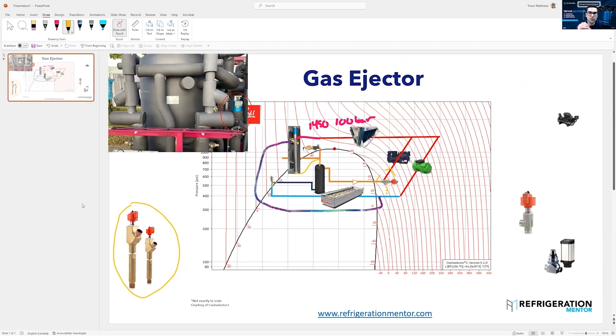They do the same thing. Instead of sending that medium temp suction gas to the medium temp compressors, it's taking it back, putting it into the flash tank. From the flash tank, it's going to the parallel compressor instead of the medium temp compressor.